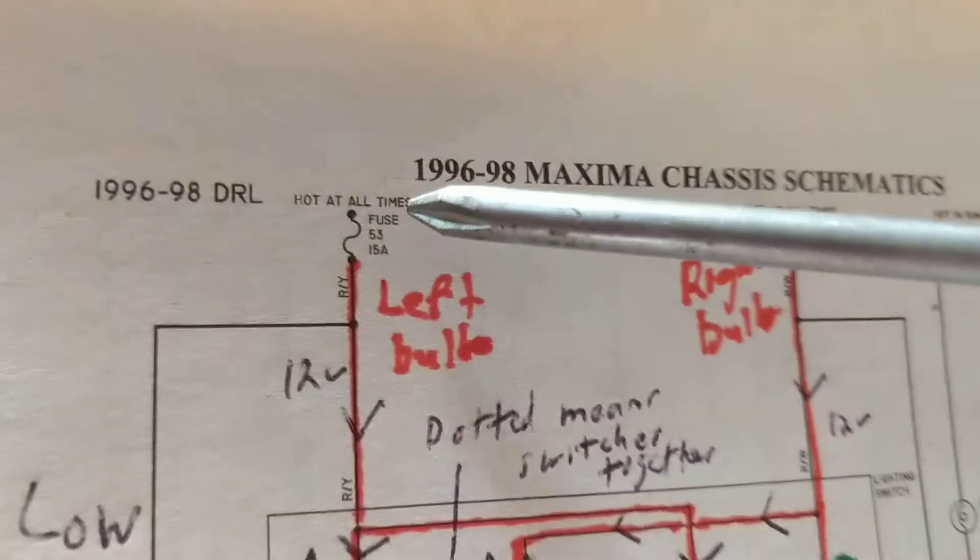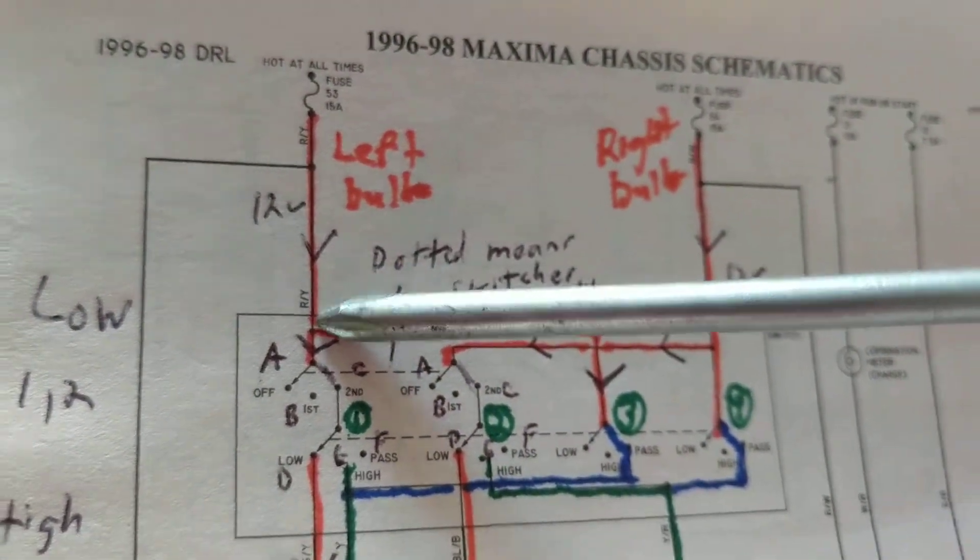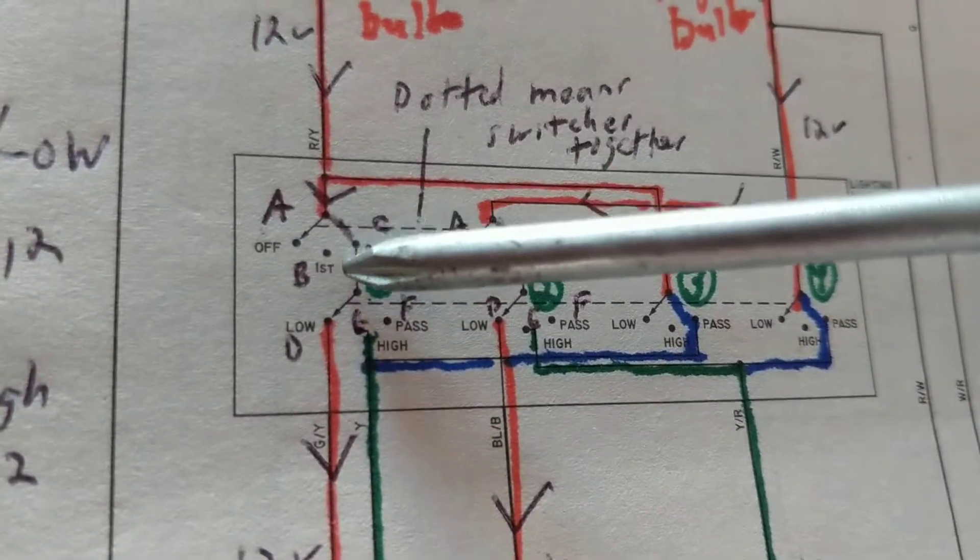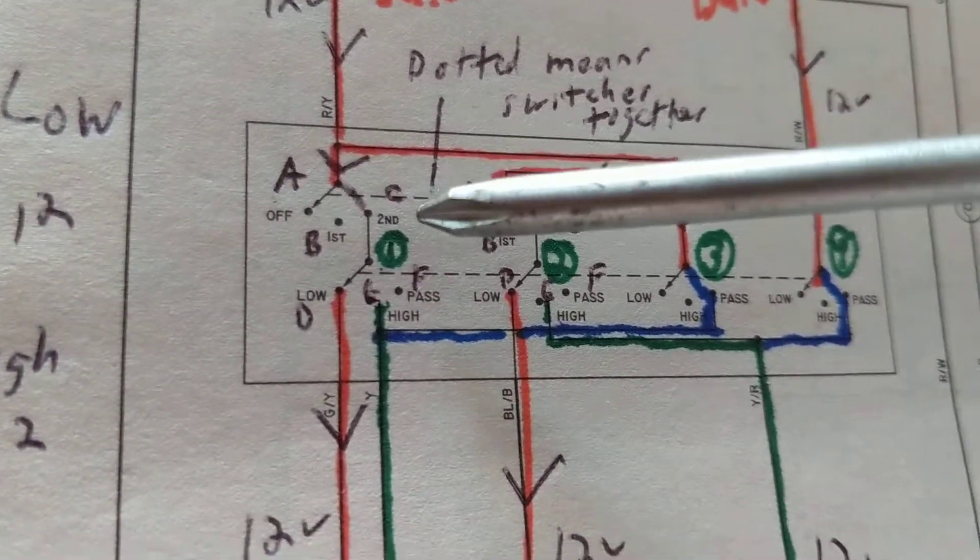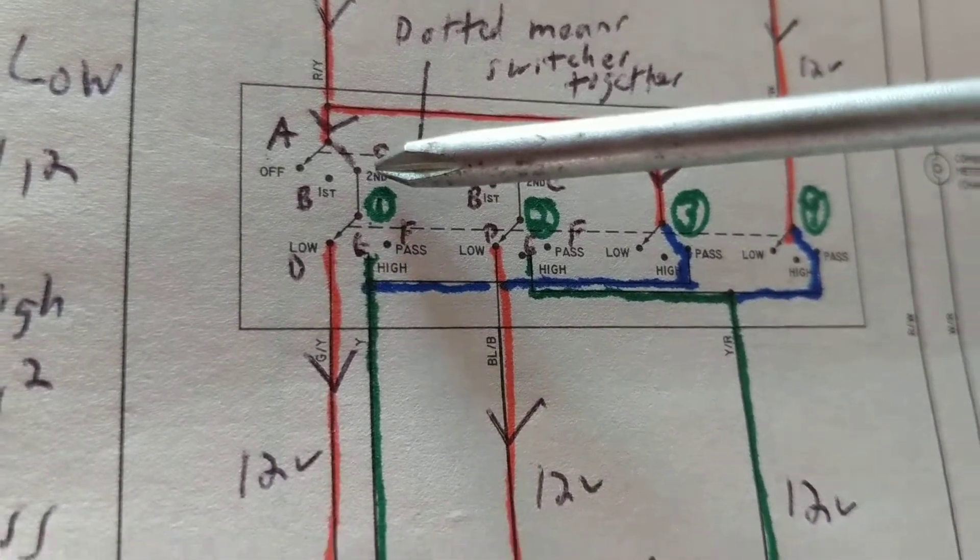Now, from the fuse, we always begin. Current flows. Follow the orange line, and that's important. Now, come over here. Off, first, and second. It seems like this is parking, this is parking light, and this is headlights.